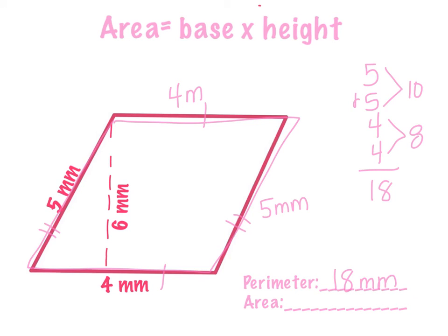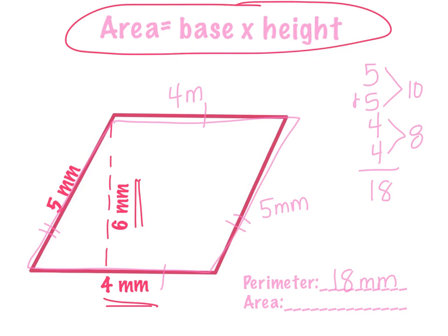Finding the area, I gave you a clue at the top. The area is the base times the height. Hopefully you didn't get confused and used the slant height. What you should have done is multiplied 4 times 6. 4 times 6 is 24. Your answer is 24 millimeters squared or square millimeters.